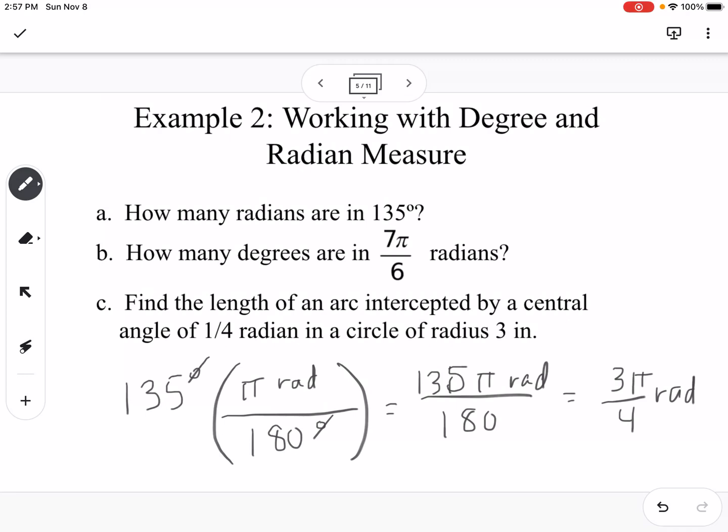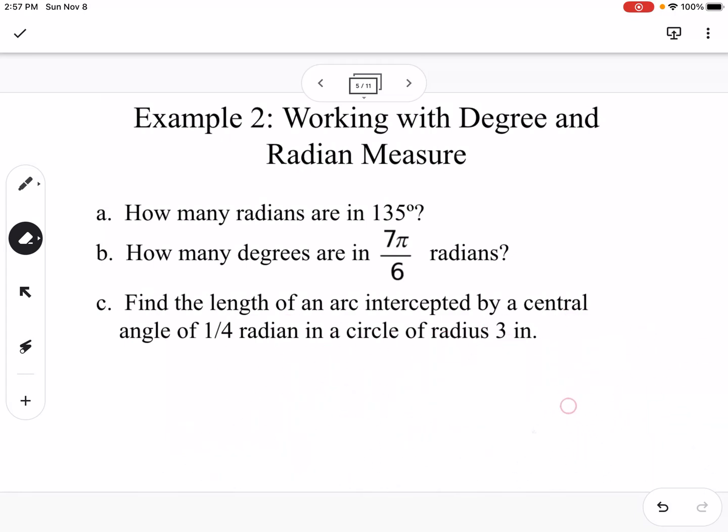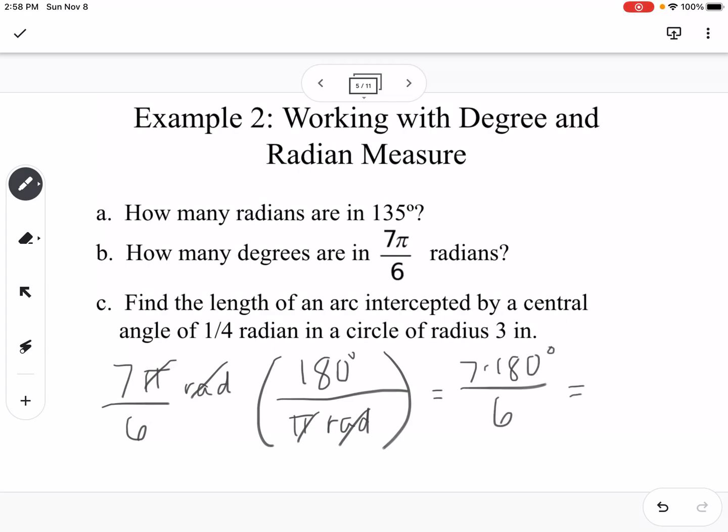That's going from degrees to radians, and we're going to go the opposite direction. So if I have 7π over 6 radians, we're going to use that same conversion, but this time I want to cancel the π radians. So the π radians goes on the bottom, and the 180 degrees goes on the top, so the π radians cancel. So then I would have 7 times 180 degrees on the top divided by 6, so we get 1260 divided by 6, which is 210 degrees.